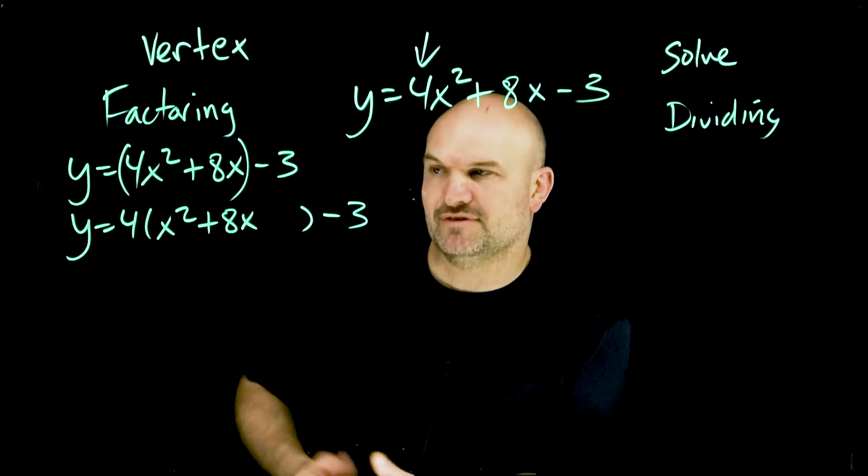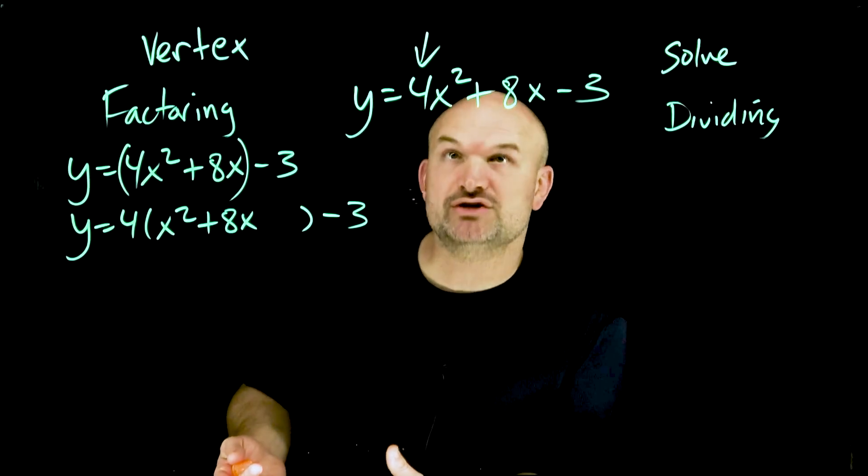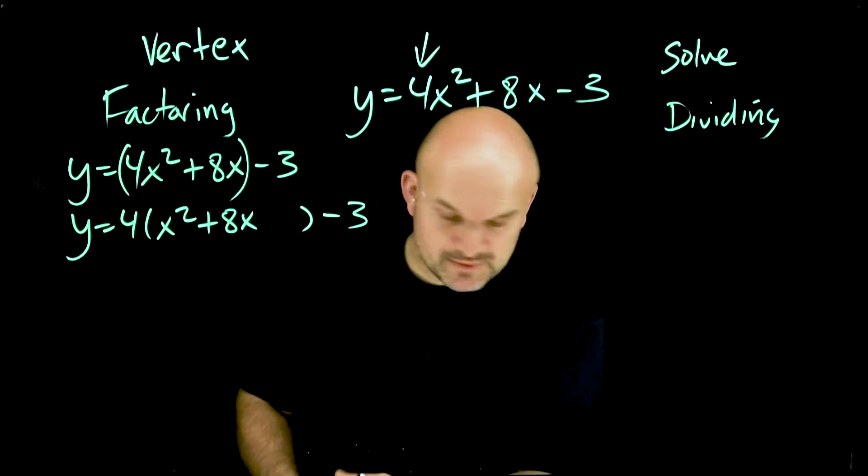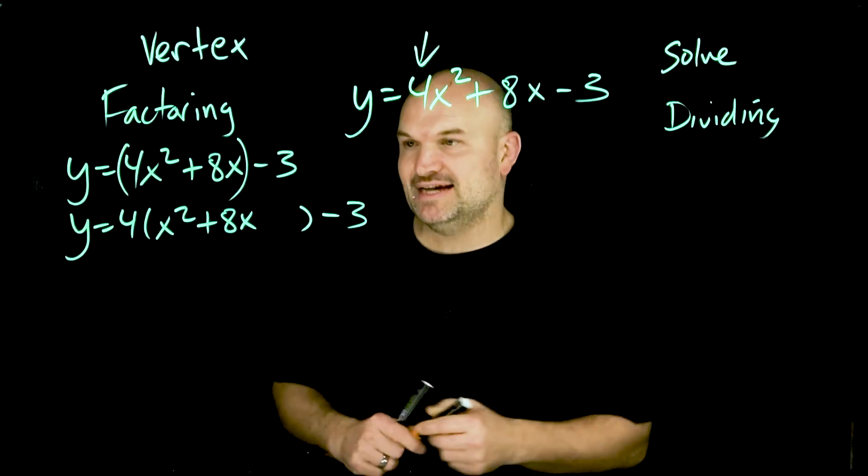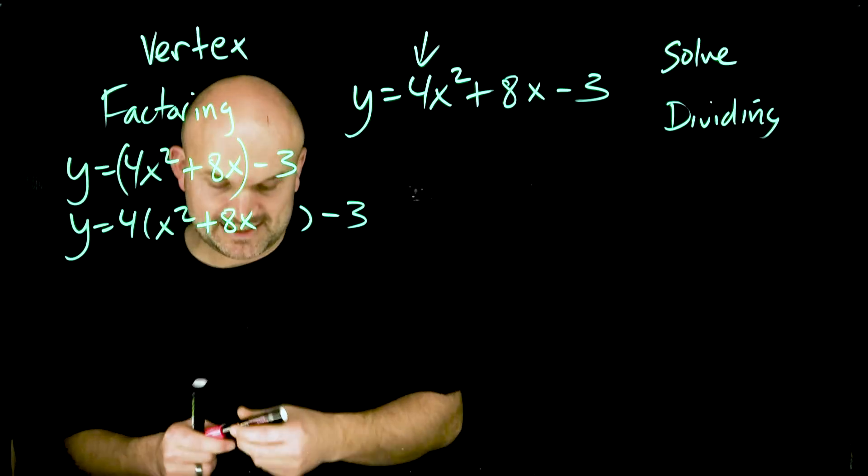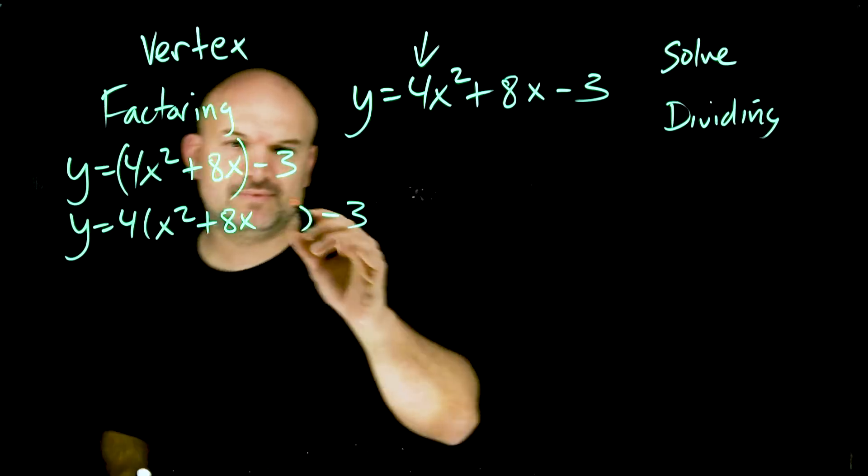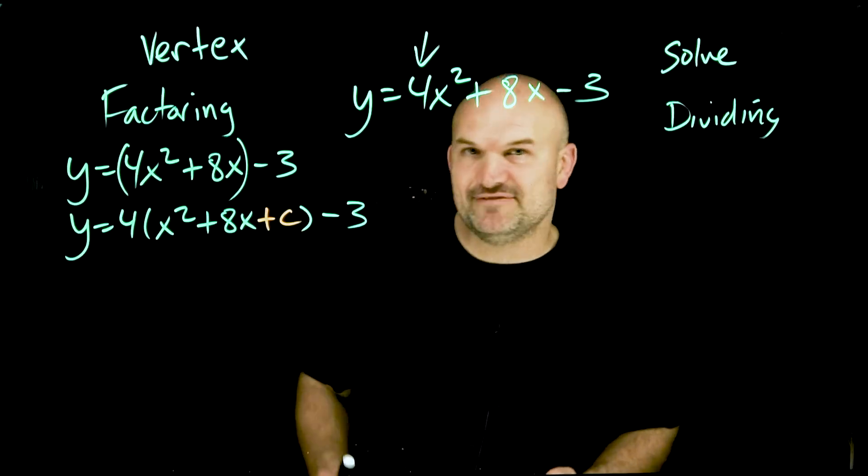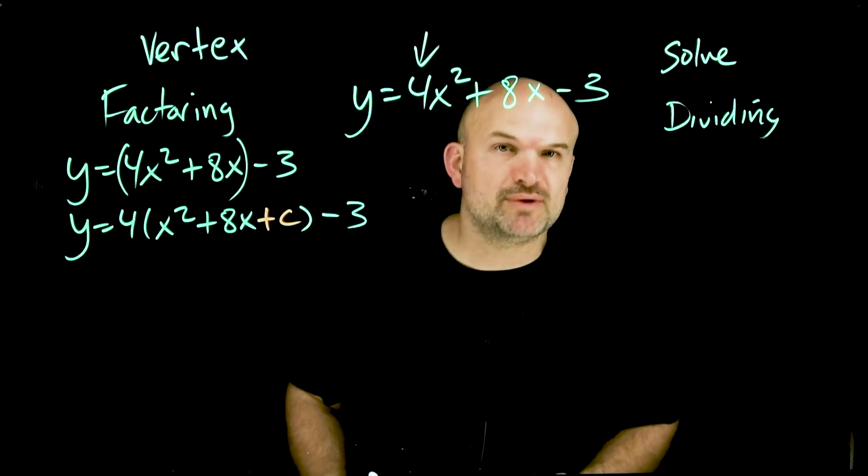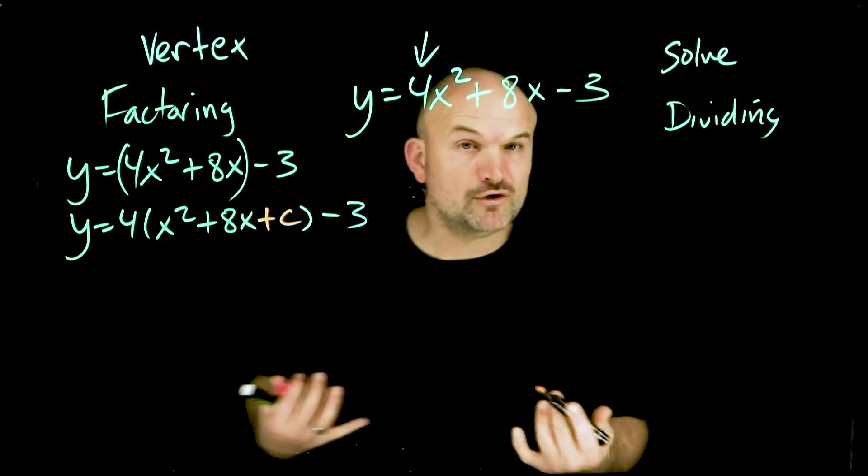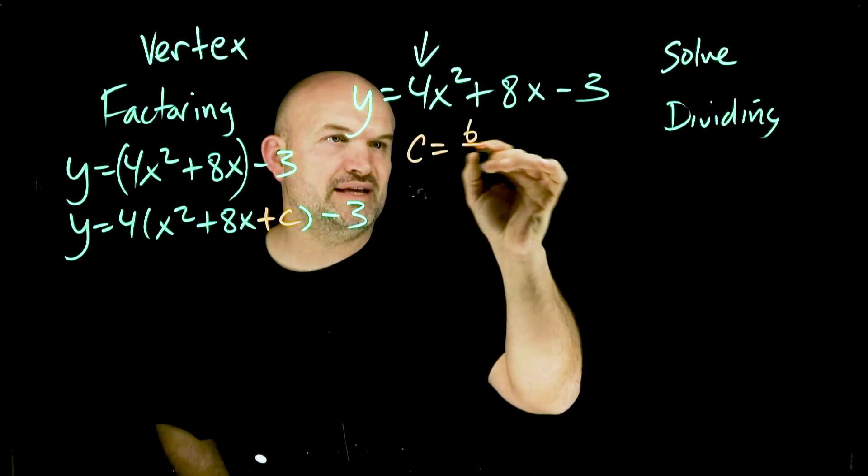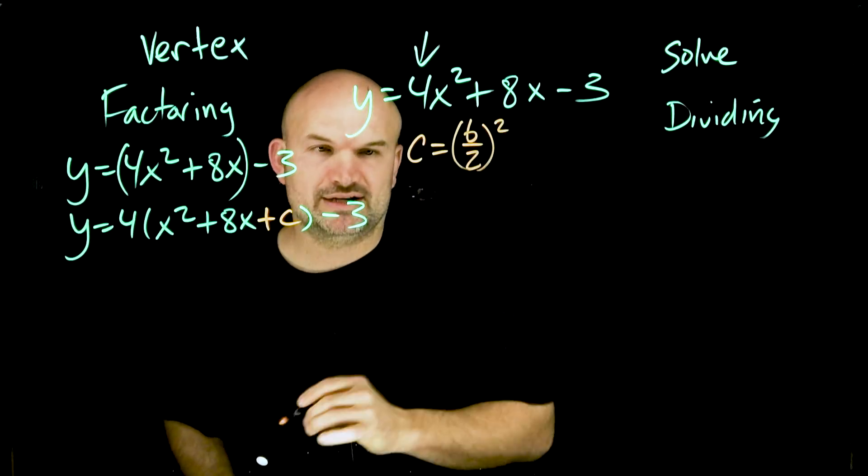Now the whole idea of completing the square is creating a perfect square trinomial. So what we need to be able to do is identify the value c that creates that perfect square trinomial. How do we identify this value c? Well thankfully there's a little formula that we can follow: c equals b divided by two, quantity squared.